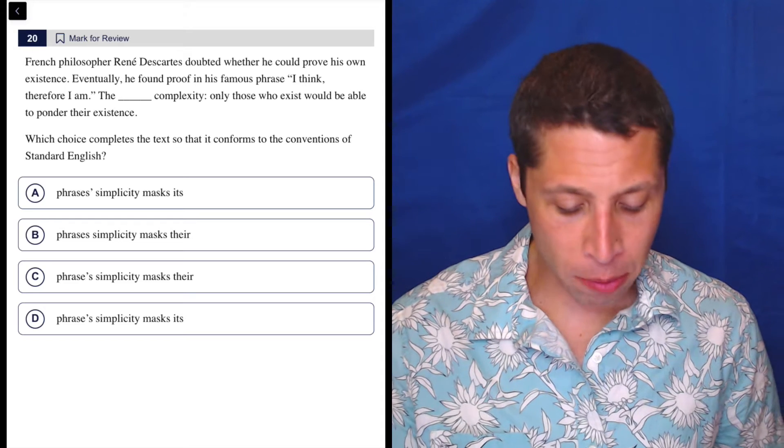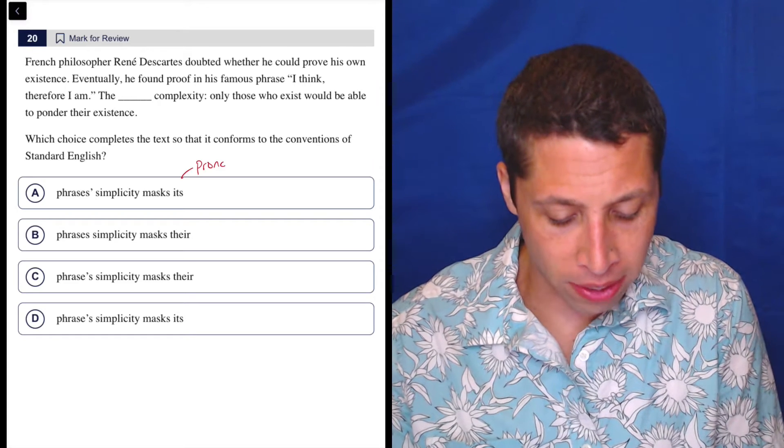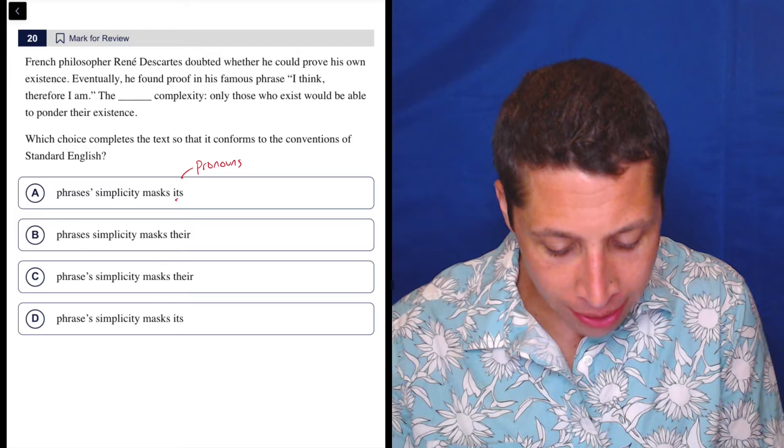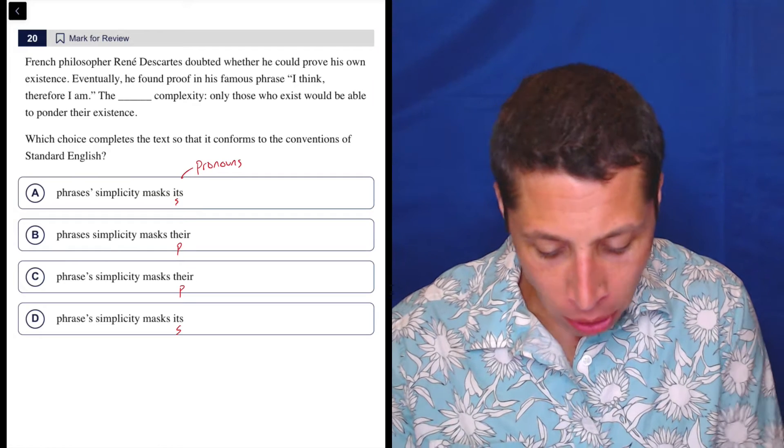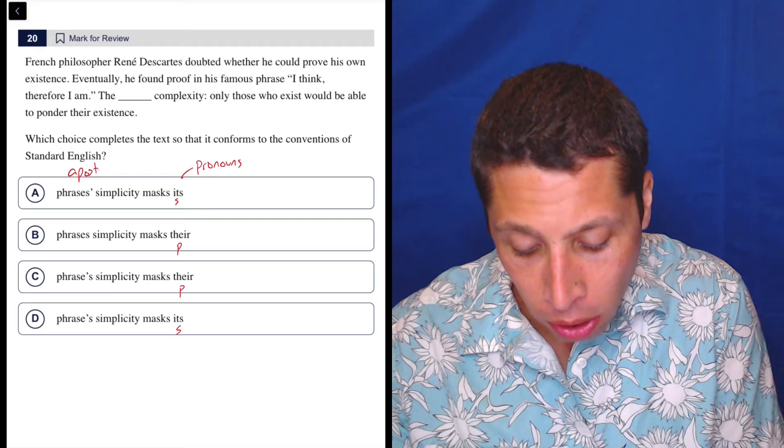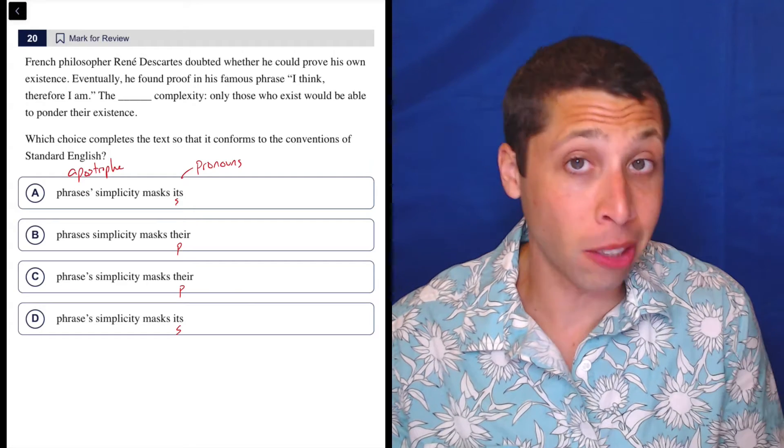It used to much more often, but this seems to be testing the pronouns. We have to decide, do we need the singular it's or the plural there? And then we also have the apostrophes, which in a way are also a little bit about singulars and plurals.